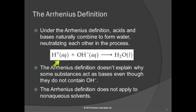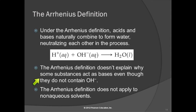Acids dissolve and form hydrogen ions; bases dissolve and form hydroxide ions. And when a hydrogen ion and a hydroxide ion get together, they form a water molecule — this is the neutralization process between acids and bases. The Arrhenius definition is very nice, but it doesn't explain everything. It doesn't explain how some substances like ammonia can act as bases even though they don't have OH- in them, and it does not apply to non-aqueous solvents, which limits its usefulness.